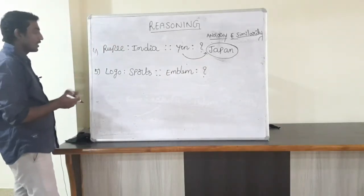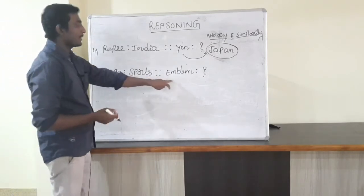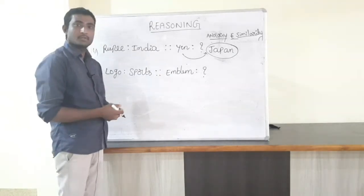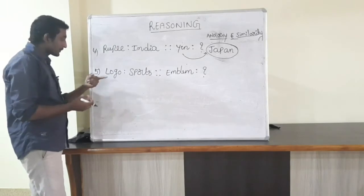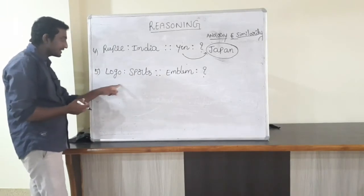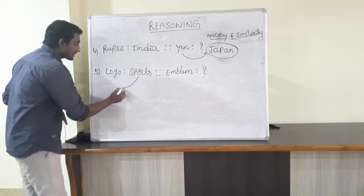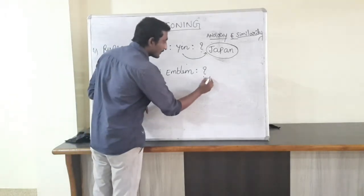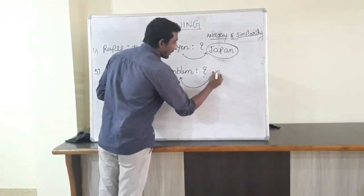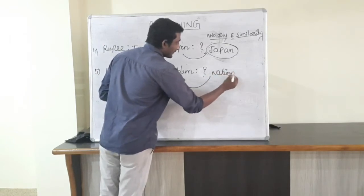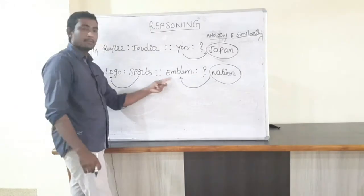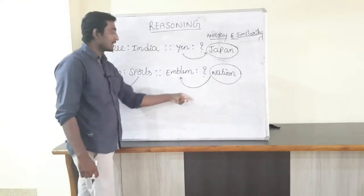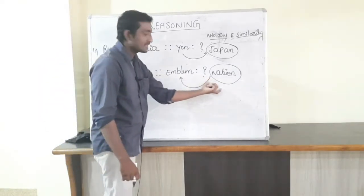See the fifth question. Logo is to sports, Emblem is to what? The symbol of sports is called Logo. Same like that, the symbol of a nation is called Emblem. Sports symbol is called Logo, nation symbol is called Emblem. So the answer is nation.